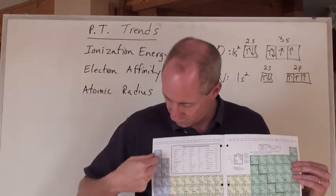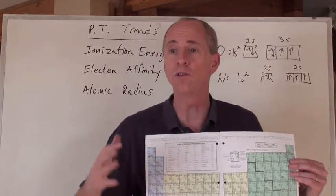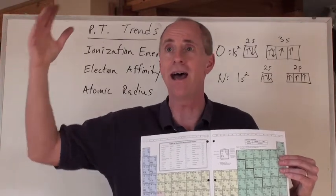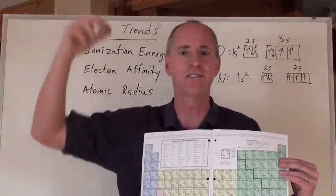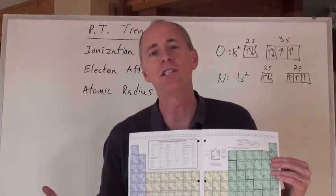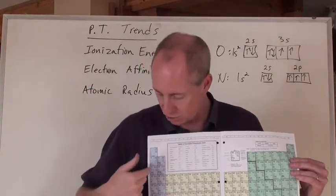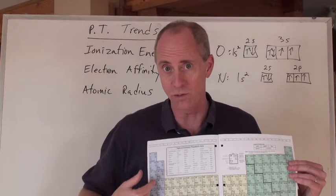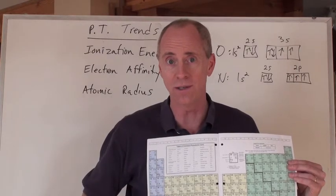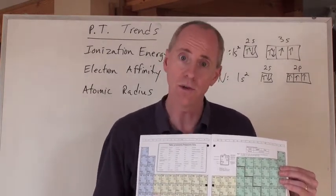What happens when you go down a group on the periodic table? Those electrons are farther and farther away from their nuclei — at n equals 6, n equals 7 — and therefore it becomes much easier to remove them. So ionization energies decrease going down a group; they decrease going down and increase going across.